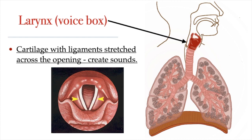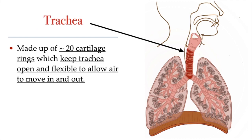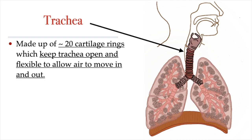Here you can see an animation of a superior view of the larynx. The vocal cords, pointed out by the yellow arrows, open and close. When we speak, when we yell, when we sing, air coming up from the lungs and trachea will vibrate the vocal cords, which is what produces the sound that we hear. Air then passes from the larynx into the trachea. The trachea is a tube that allows air to move in and out of the lungs, and it is covered by about 20 cartilage rings, which support the trachea and prevent it from overexpanding or from collapsing.